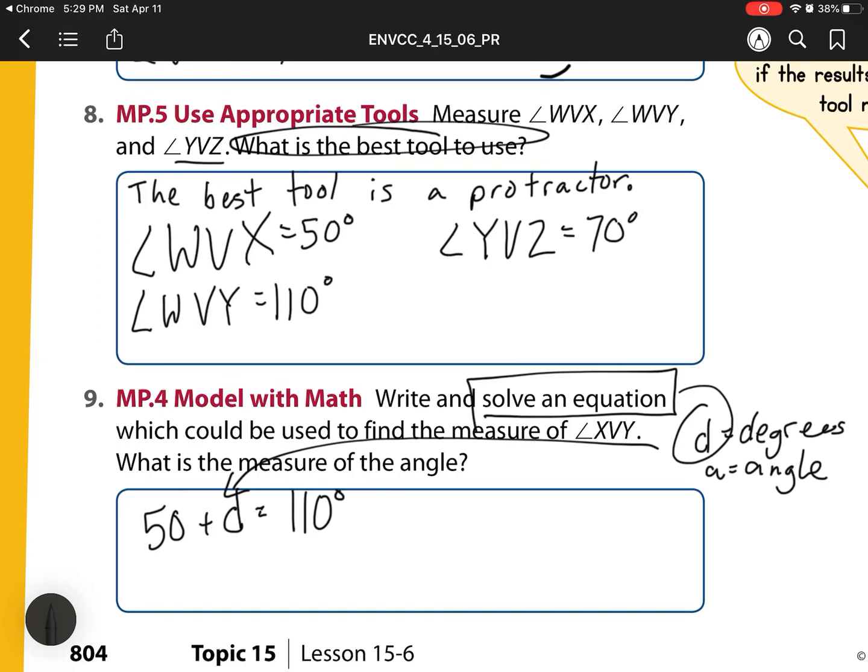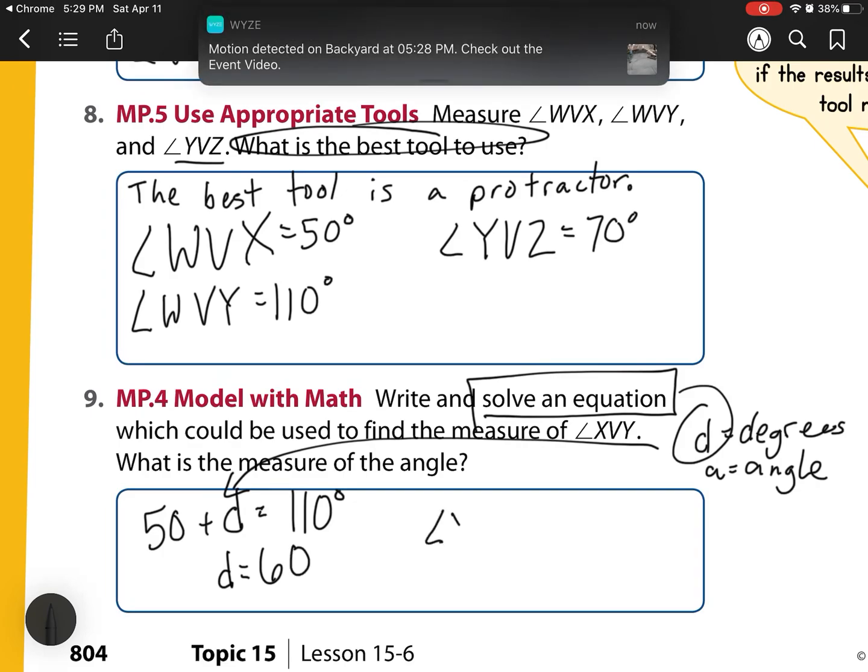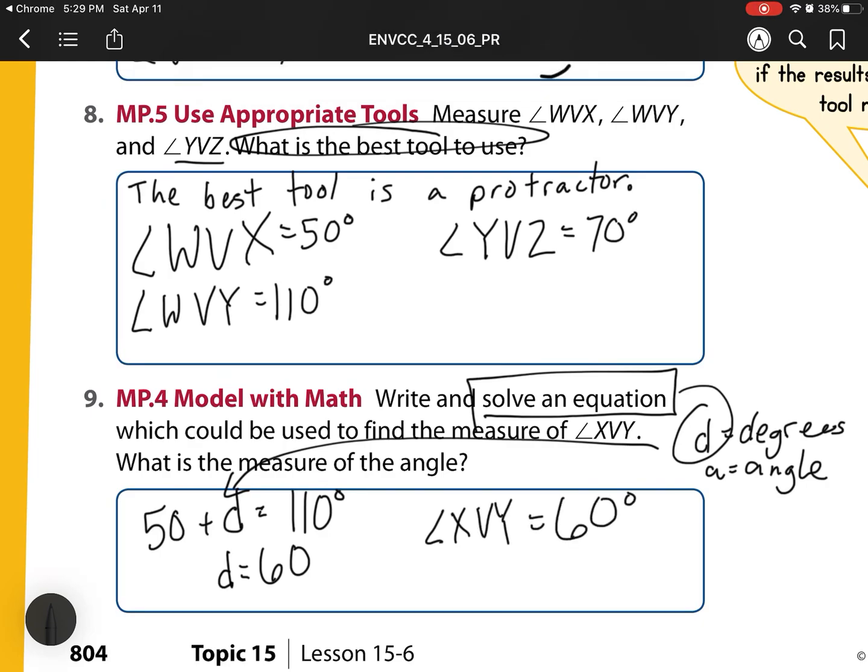And so what do we know? We know 50 plus something equals 110. And I know that 50 plus 60 equals 110. So D has to equal 60. So now we can answer what is the measure of the angle. XVY equals 60 degrees.